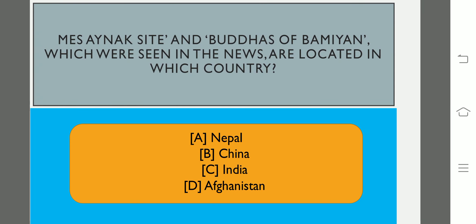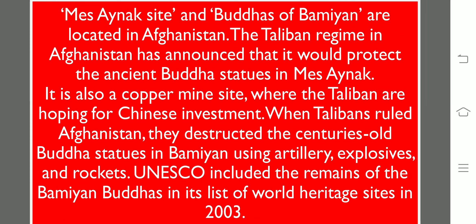Here is question number one on your screen. Mesh Anayak site and Buddhas of Bamiyan, which were seen in the news recently, are located in which country? The answer is Afghanistan. The Mesh Anayak site and Buddhas of Bamiyan are located in Afghanistan, and the Taliban regime has announced that it would protect the ancient Buddha statue in Mesh Anayak.